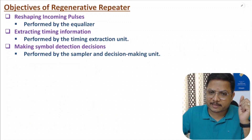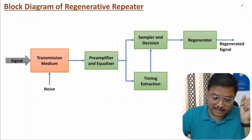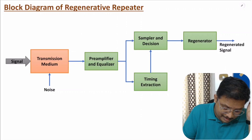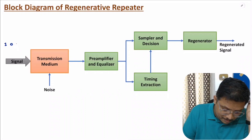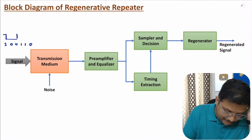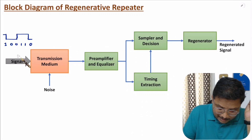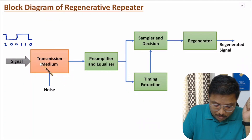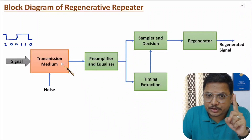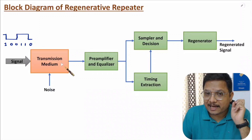Now let me explain the block diagram of the regenerative repeater. Here we have one digital signal — let me draw one digital signal that has one, then zero, zero, one, one, and zero. If I plot this, it appears somewhat like this. This signal will be transmitted through the medium. So after some distance, two things happen: one is attenuation, and second is noise getting added.